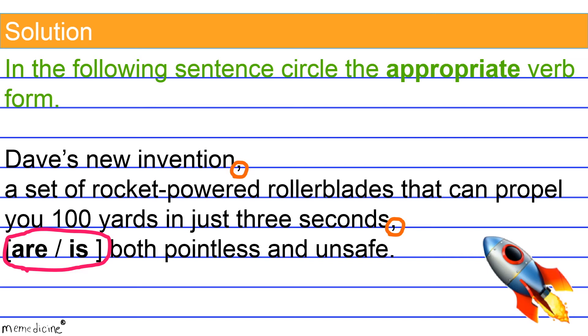Our next step is to literally cross out the interrupting phrase, the elaborate description between the commas that detail Dave's new invention. Interrupting phrases are not part of the core sentence. Therefore, they do not change the relationship of the core noun, this is the subject of the main verb, to the main verb.